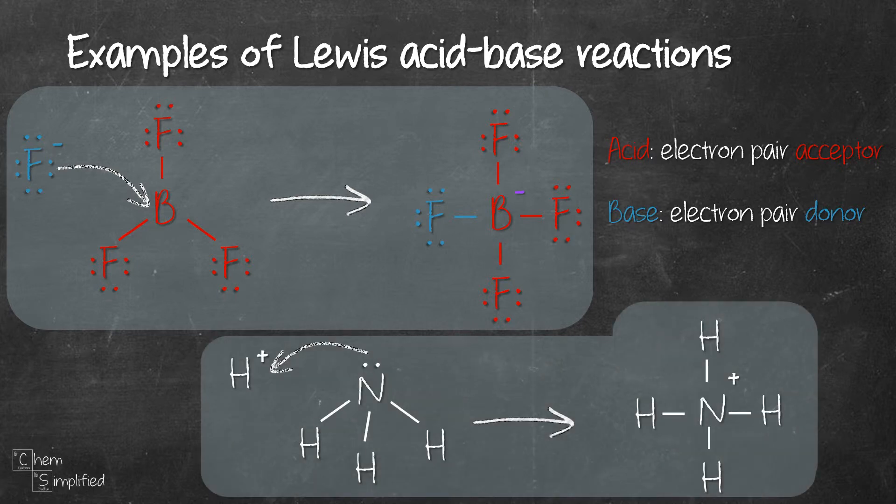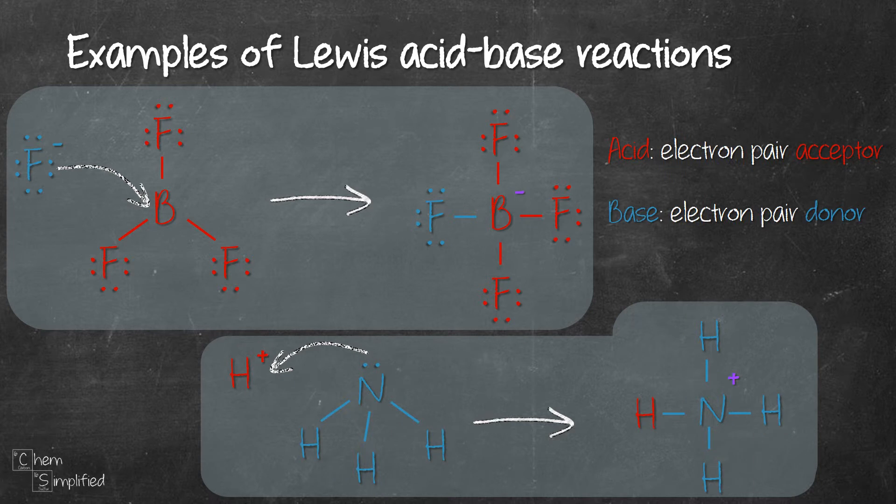Now let's look at another example. H plus and NH3. Which do you think is the acid and base? Since H plus accepted the electron pair from NH3, that makes H plus the Lewis acid and NH3 the Lewis base.